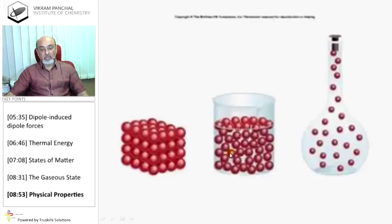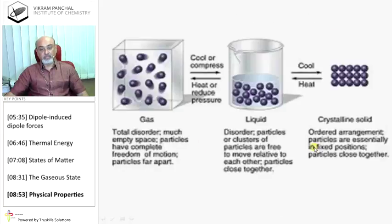And this is the reason you can see solid, liquid, and gases, and the arrangement of atoms or molecules in these three physical states. Gases have total disorder. There will be much space among the particles, and they have complete freedom for motion.